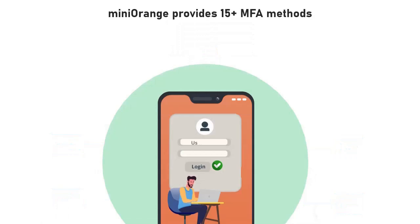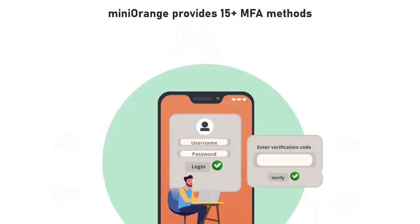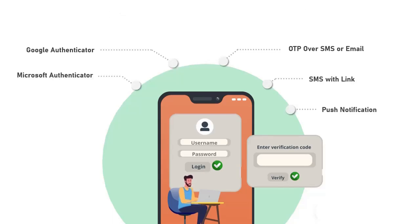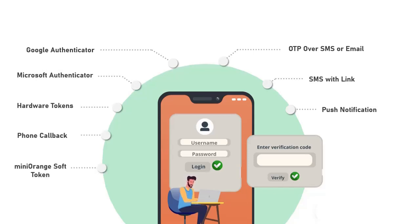MiniOrange provides 15 plus MFA methods like OTP over SMS or Email, SMS with Link, Push Notifications, Google Authenticator, Microsoft Authenticator, Hardware Tokens, Phone Callback, MiniOrange Soft Token, and many more.